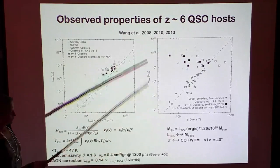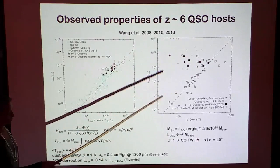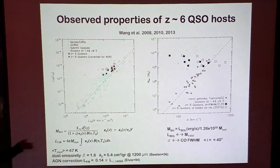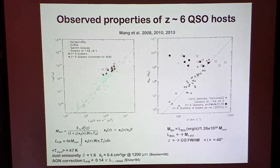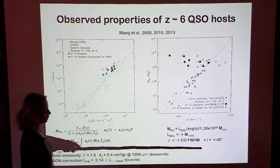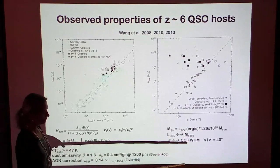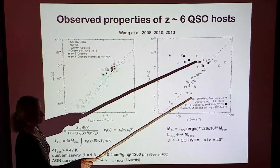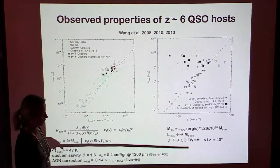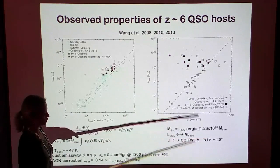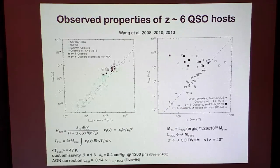As for this correlation, black hole masses in this particular plot have been estimated from the bolometric luminosity, although for some of these sources you have additional indications. The sigma is inferred from the CO line width, and of course you have uncertainty related to the inclination angle. The filled and empty squares correspond to different empirical calibrations of this relation and also to different assumptions on the inclination angle.